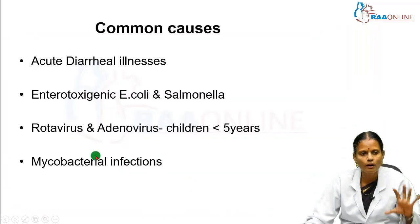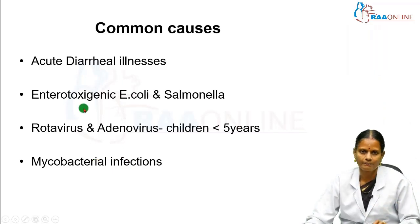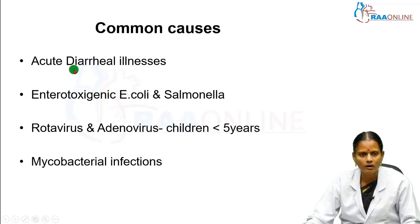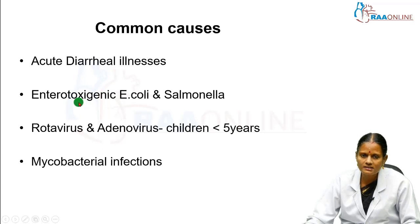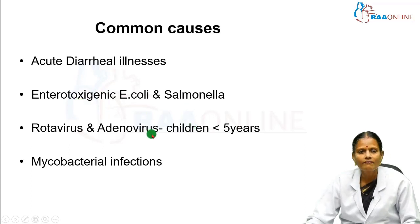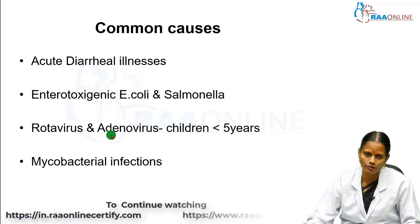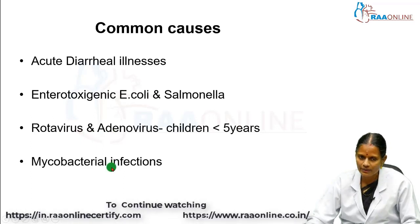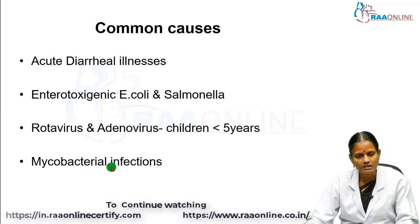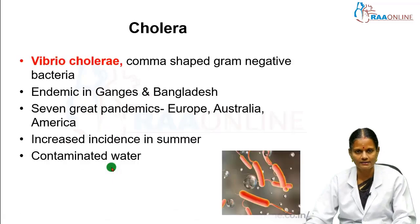With that introduction, we will look at each one in detail. The common causes of acute diarrheal illnesses include enterotoxigenic E. coli and Salmonella. In children, we most commonly encounter viral infections — viral diarrheas — including rotavirus, norovirus, and adenovirus. Because we live in the tropical part of the world, mycobacterial infections are also an important cause of enterocolitis.